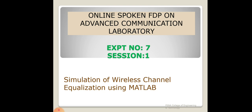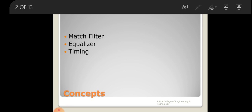As an outline, we will cover the communication system model and why we need equalization, the design of equalization matched filter concepts, and timing concepts. A digital communication system requires transmit and receiver filters on both sides of the channel. These filters shape the transmitted signal to meet spectral requirements.